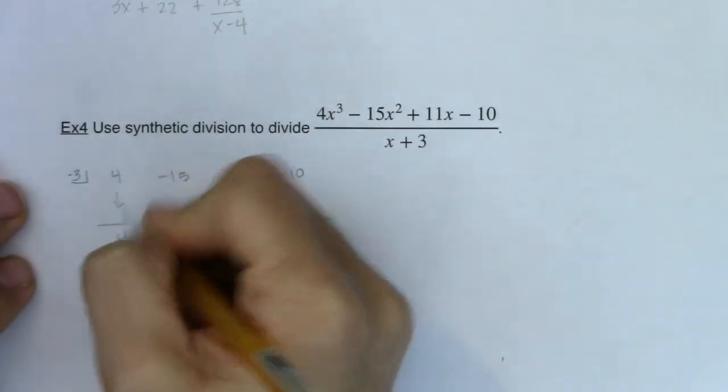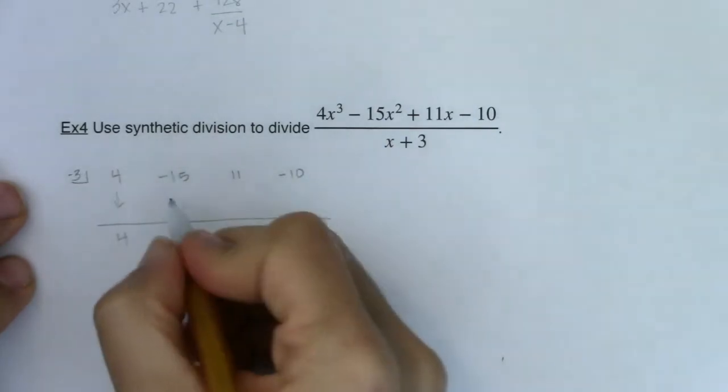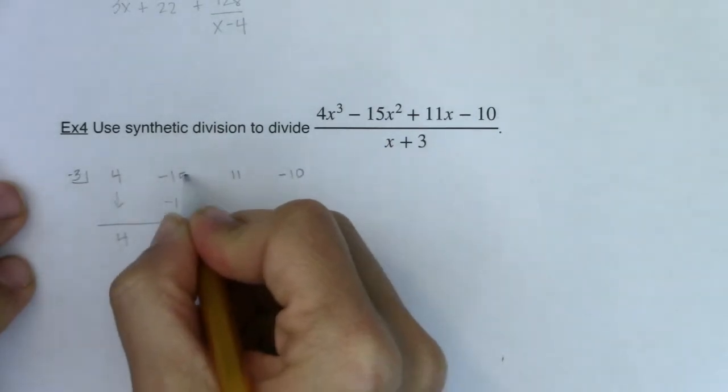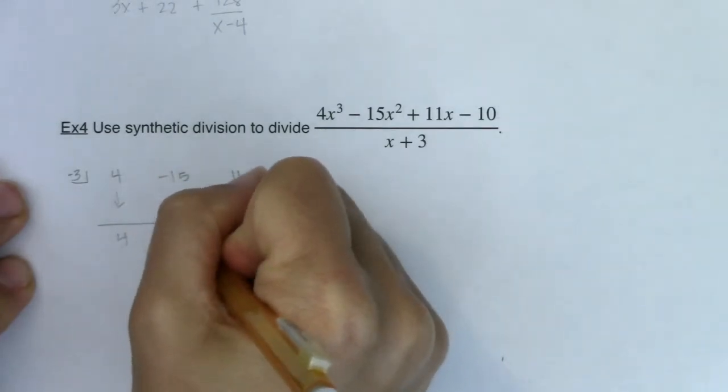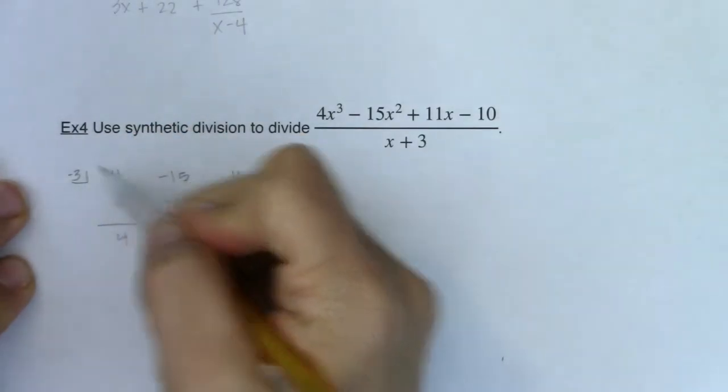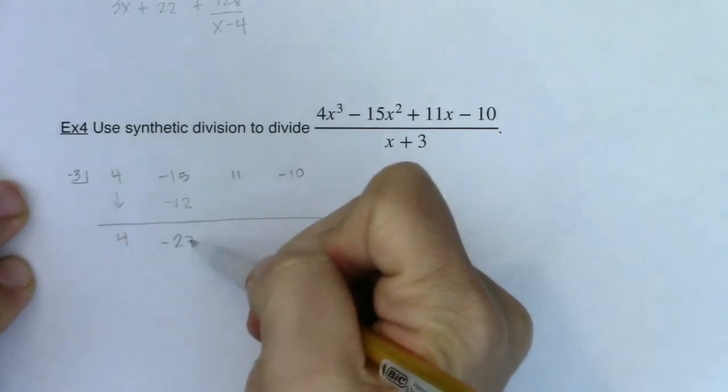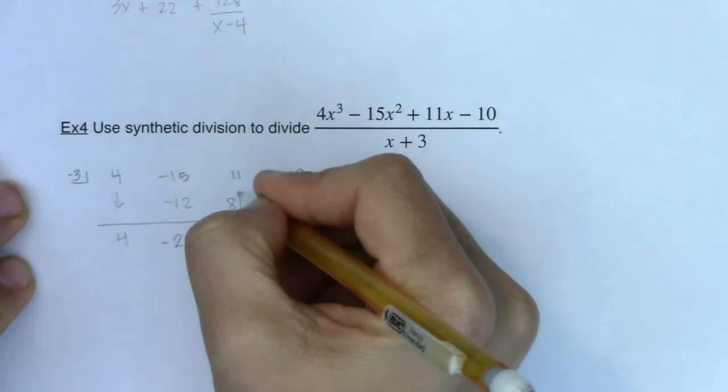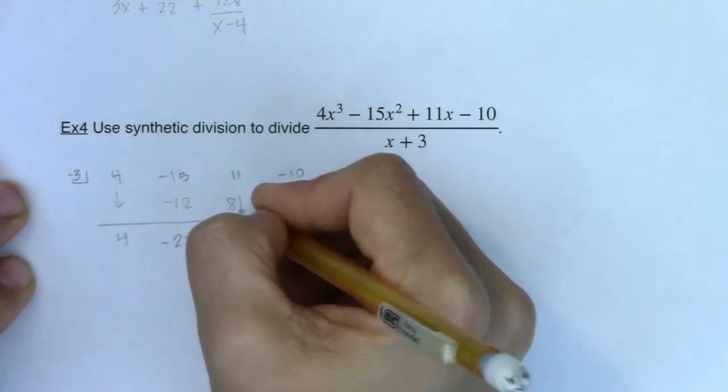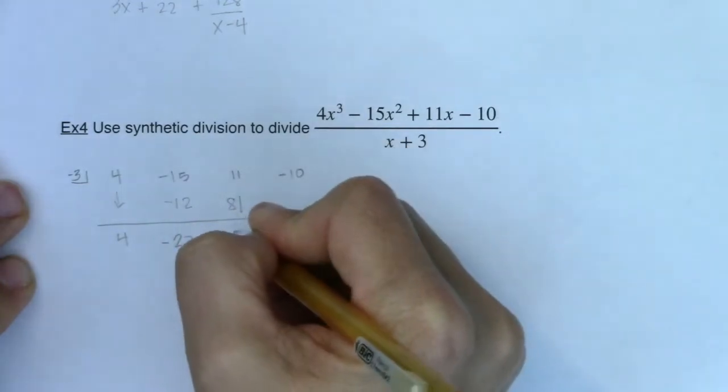So this 4 just comes down. Negative 3 times 4 is negative 12. Negative 15 plus negative 12, negative 27. Negative 3 times negative 27. Can I do that in my head? Oh, I can. 3 times 27 would be 81. So 81.